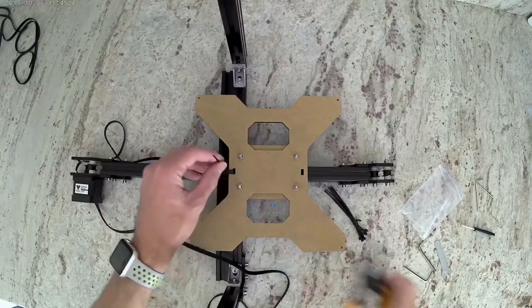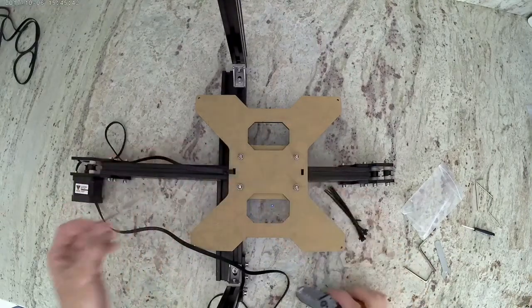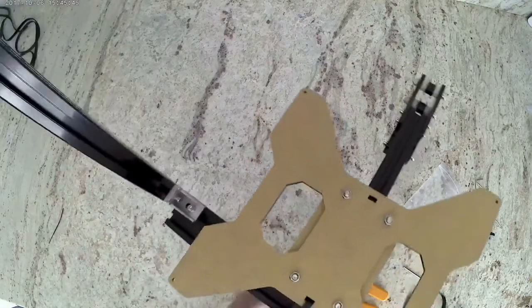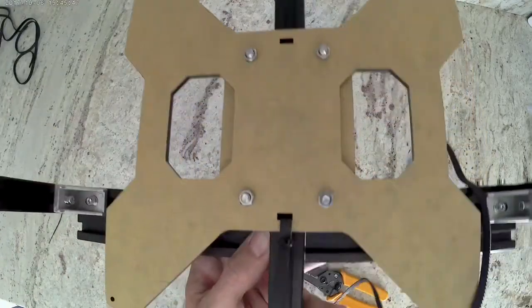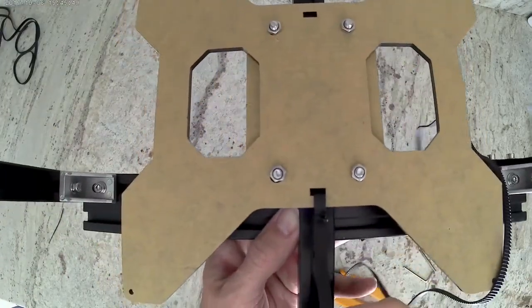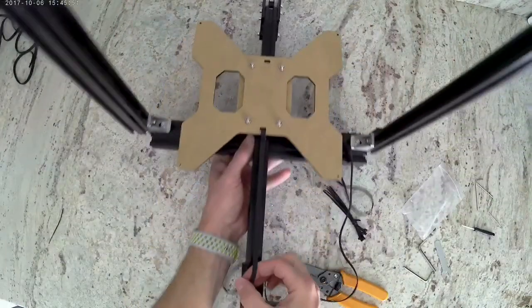Now I'll cut off the end of the zip tie. I'm going to lift this up so that you can see the belt. The teeth are facing down, so all we see is the flat part of the belt.